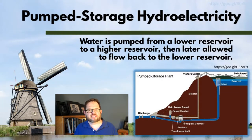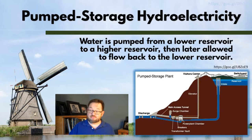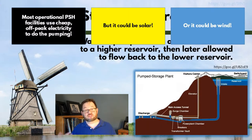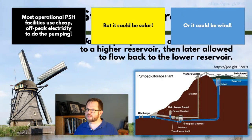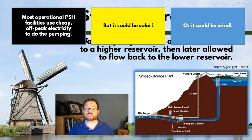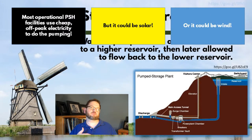For example, in Dublin they do this — I toured a PSH facility there. The issue in Dublin, and in many places using this technology, is insufficient grid capacity during peak demand. So at night, when demand is low, they use excess conventional electrical production — coal in Ireland — to pump water from the lower reservoir to the higher reservoir. During peak demand times, they use the hydroelectric part of the system to produce the extra electricity they need. But it doesn't have to be conventional power — any renewable source like solar or wind would work just fine.